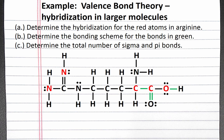To determine the hybridization of our atoms in red, we count the number of electron groups on the atom in question. For the nitrogen on the left, we have four electron groups, so we need four hybrid orbitals — the hybridization will be sp3. When counting electron groups, we count both bonds and lone pairs. For the nitrogen on the right, we have three electron groups, so we need sp2 hybridization.